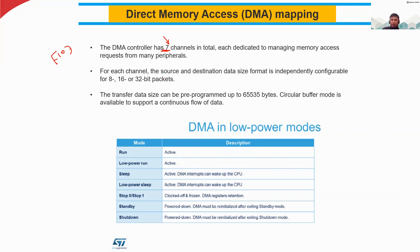For each channel we also need to configure the data size. The source and destination data size are independently configurable — it can be either 8-bit, 16-bit, or 32-bit. Whatever the number of bits we want, we can include that in the data packets during the data transfer.